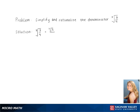Then we rationalize the denominator by multiplying by something that will make the bottom a perfect cube. So we choose the cube root of 2. This gives us the cube root of 6 over the cube root of 8, which gives us the final answer of the cube root of 6 over 2.